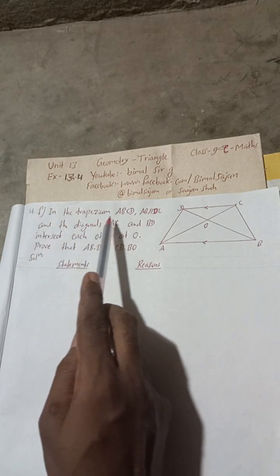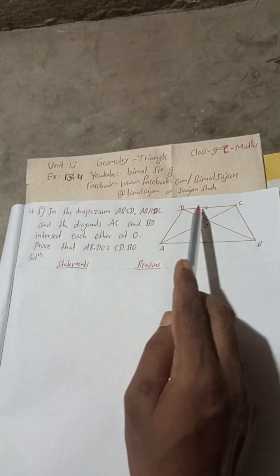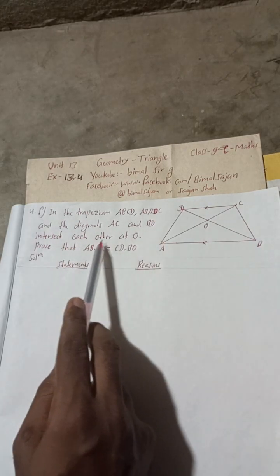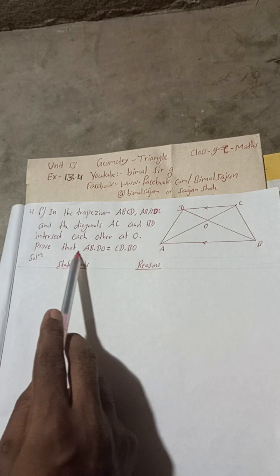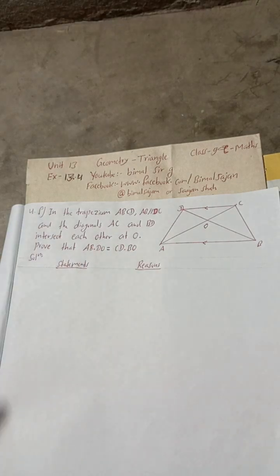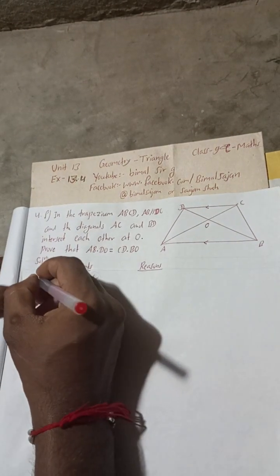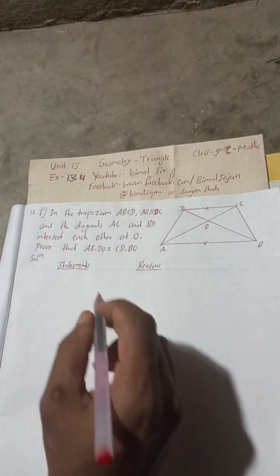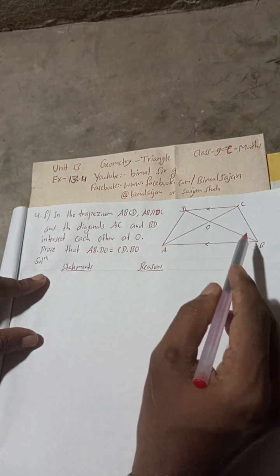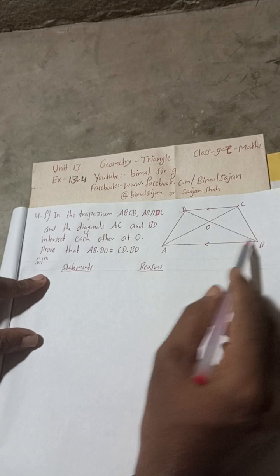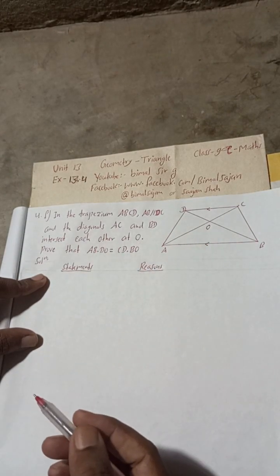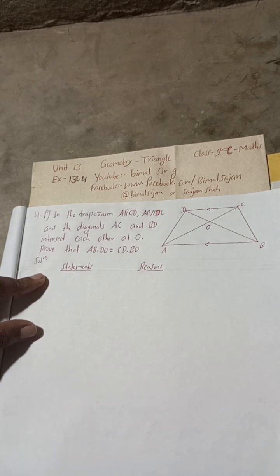For F, in the trapezium ABCD, ABCD is a trapezium, AB parallel DC and the diagonals AC and BD intersect each other at O. Prove that AB into DO is equal to CD into BO. So I have written here statements and reasons. Now to prove this AB into DO, we have to first show the similar triangles.